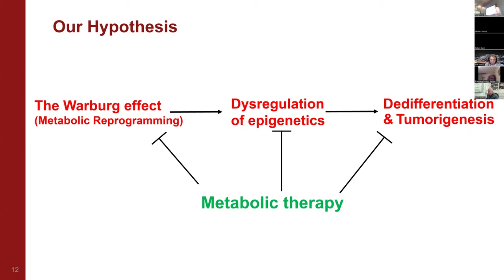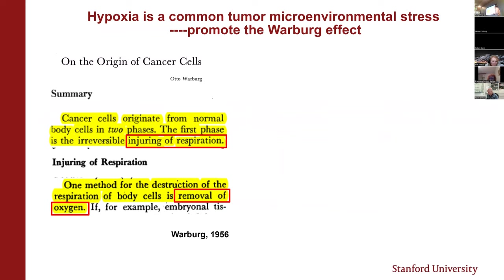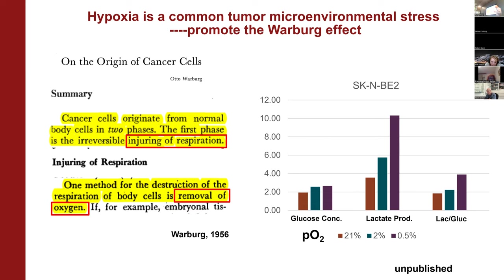To test this hypothesis, first we need a stress condition that can induce the Warburg Effect. In this case, it's hypoxia, because we know that the cause of the Warburg Effect is injury of respiration — inhibition of mitochondrial respiration. The easiest way to do it is to remove oxygen, which is hypoxia, a common microenvironmental stress existing in solid tumors. Once we put cells under hypoxia at low oxygen conditions — 2% or 0.5% oxygen — glucose consumption increases slightly, but lactate production increases a lot, leading to a doubling of the lactate-to-glucose consumption ratio. This is a typical Warburg Effect.